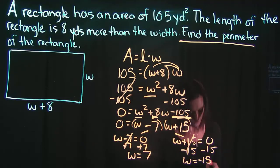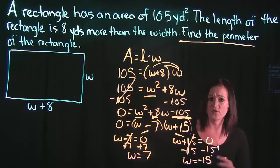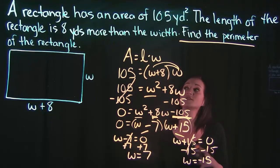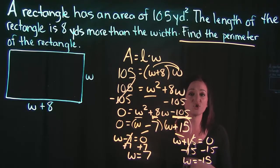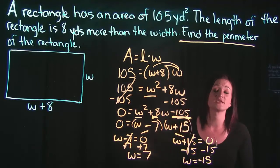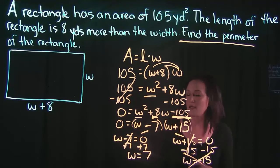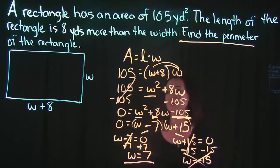Here is where you want to be careful. We got two answers for the width: 7 and negative 15. This is a real world application problem so you need to think about what those answers represent. There is no way to get negative 15 yards. Negative 15 yards does not make sense. So when you get a negative answer for this kind of problem, automatically mark it out. This means that the width equals 7.